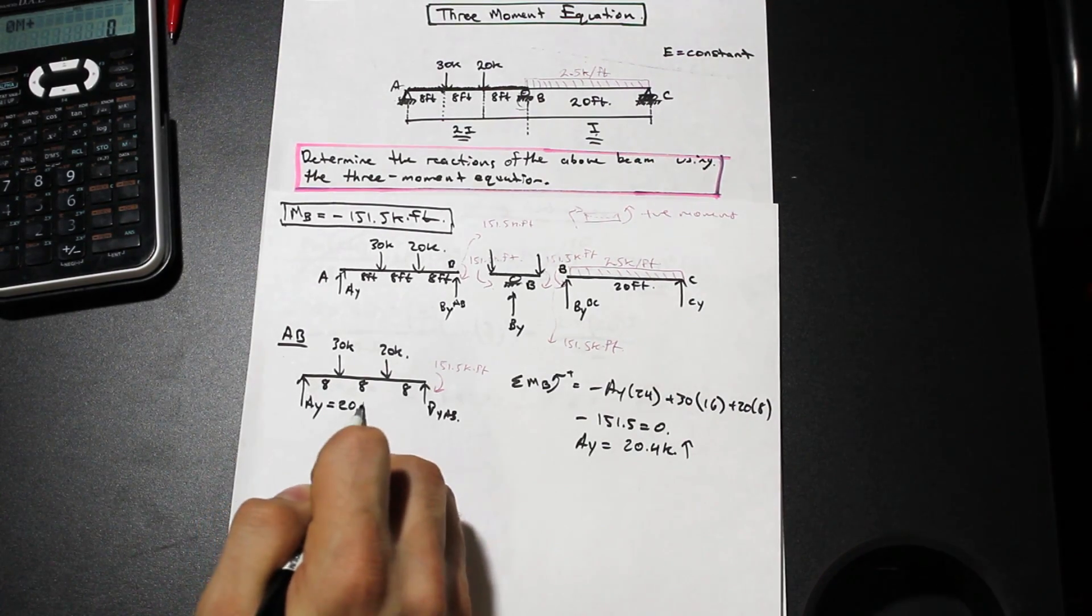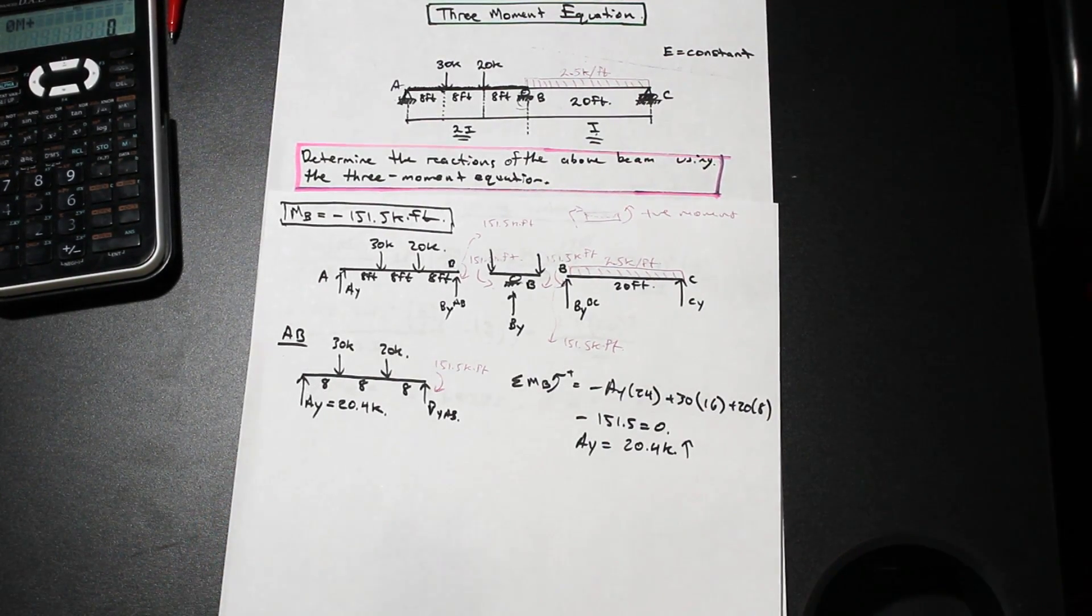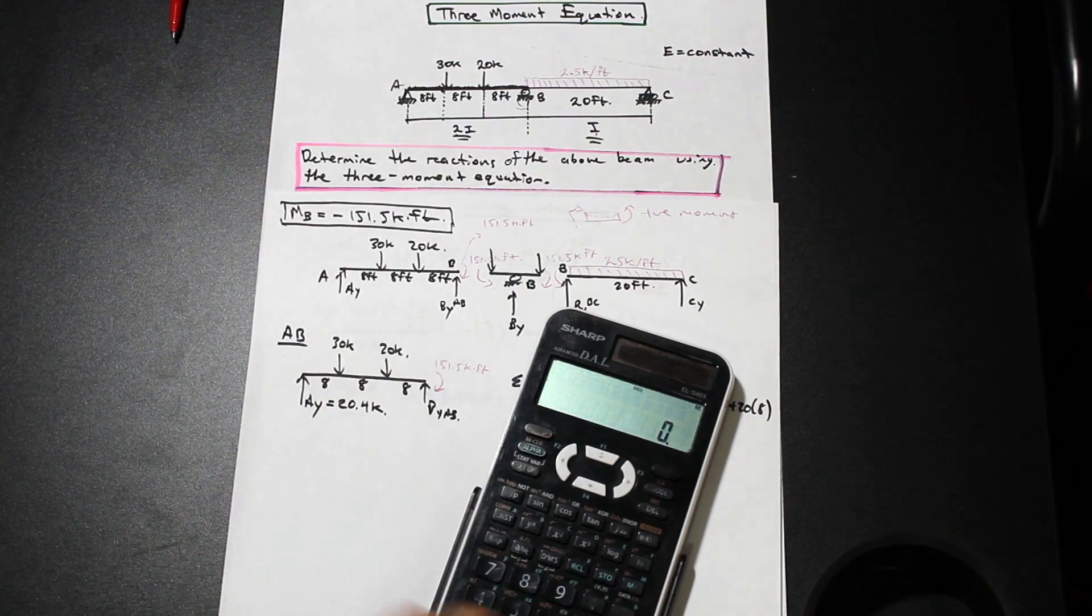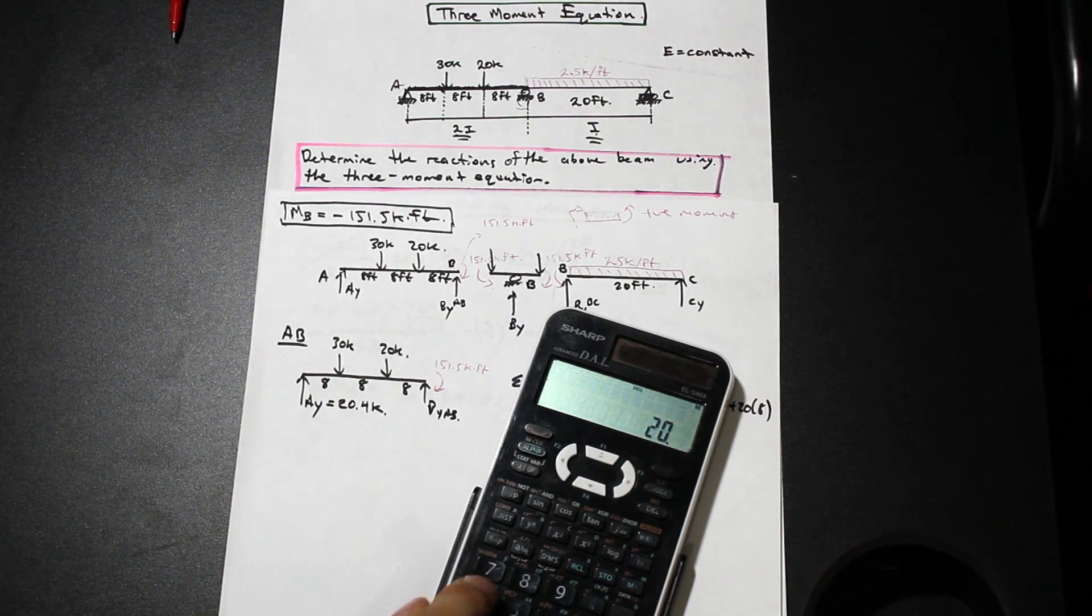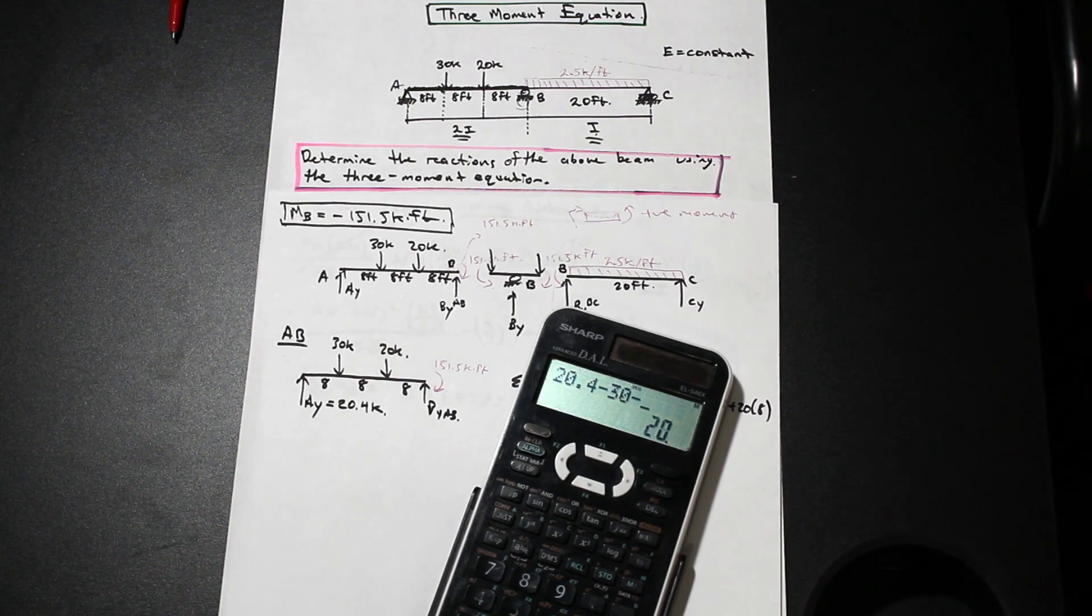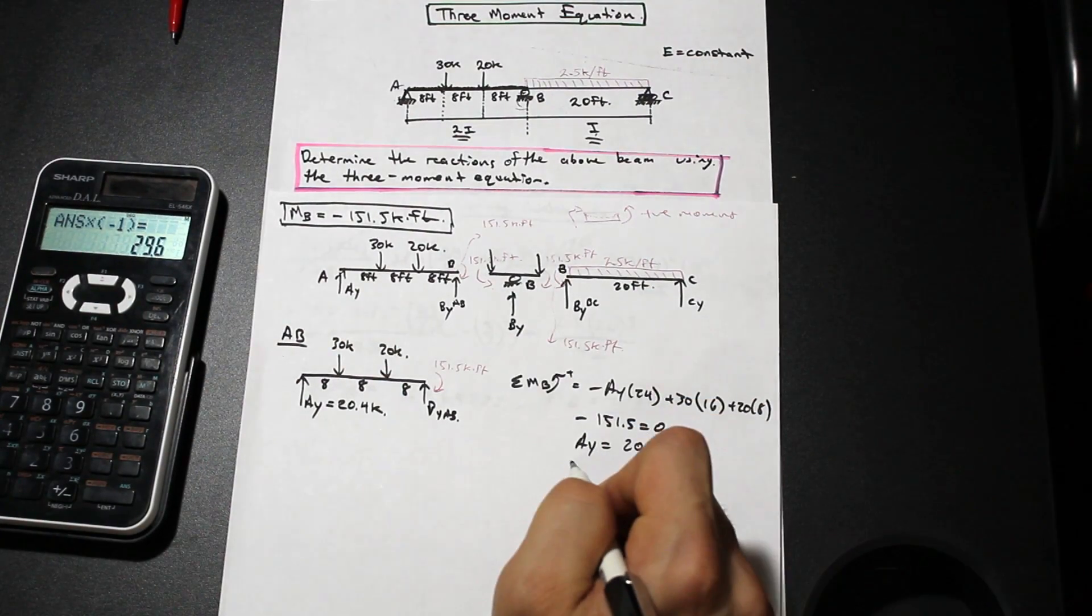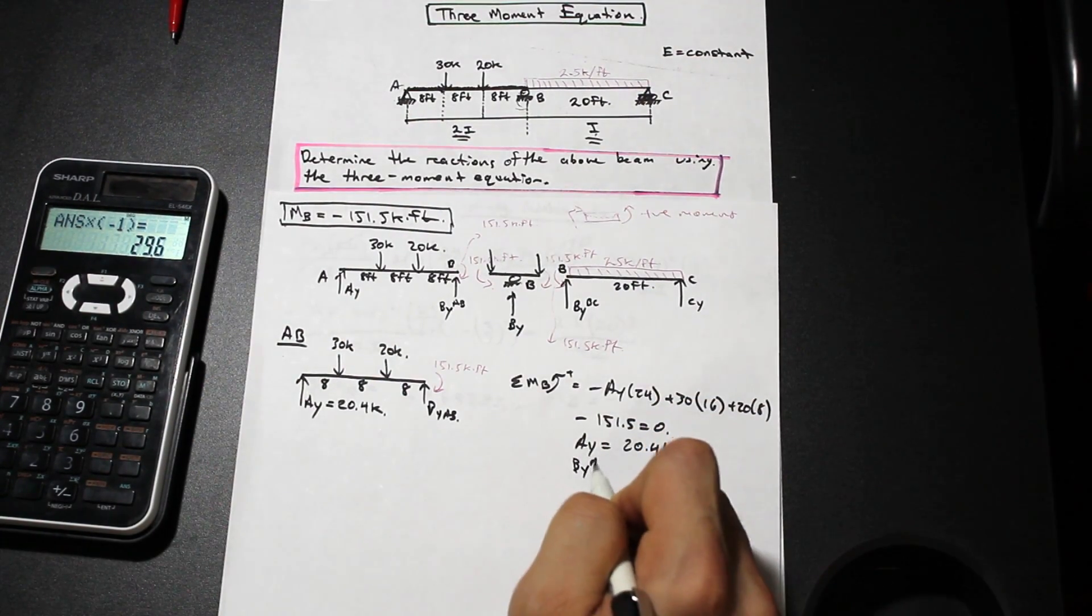If we take the summation of forces in the Y, we have 20.4 minus 30 minus 20, and then that's times negative 1, that's 29.6 for BY AB.